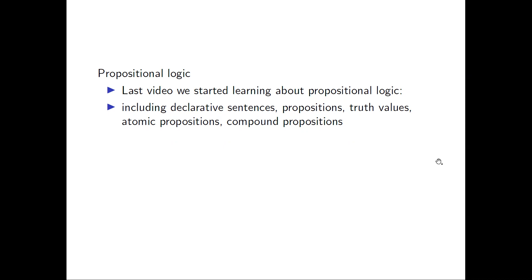For a sentence that is a declarative sentence but not a proposition, you can consider the sentence 'this sentence is false.' This sentence cannot have a value of true and it cannot have a value of false, so it is a declarative sentence but it's not a proposition. For more information about that example you can see the last video.